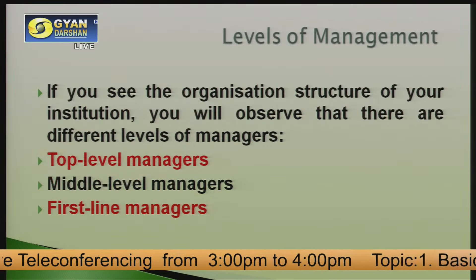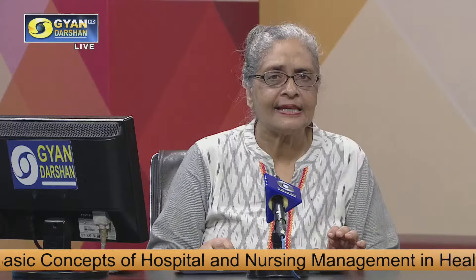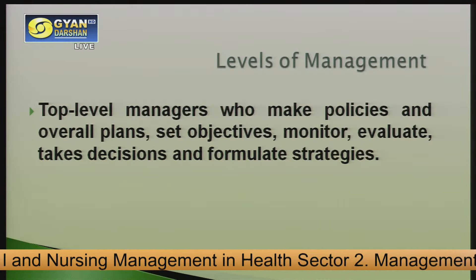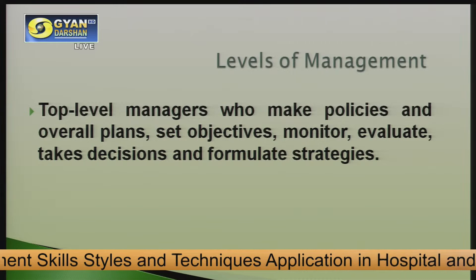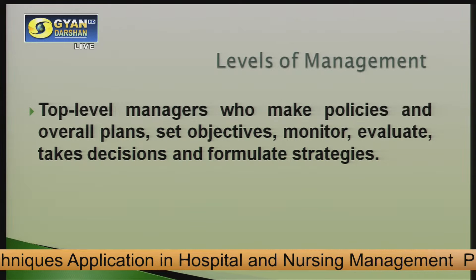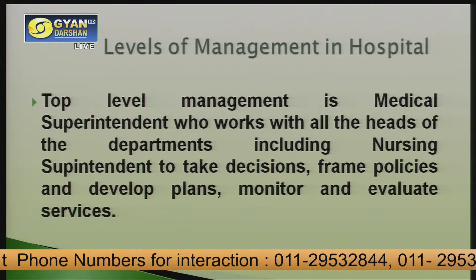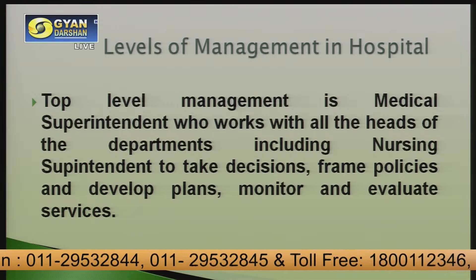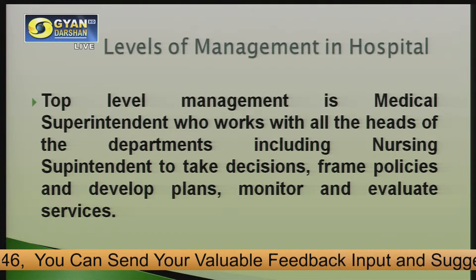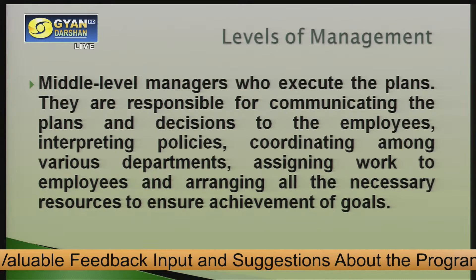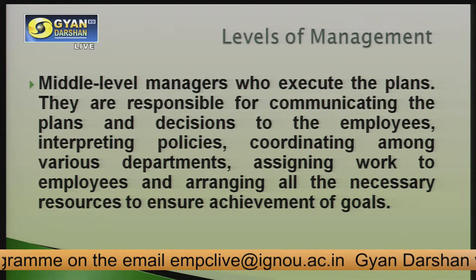Levels of management: All institutions have top-level management, middle-level management, and first-line managers. Top-level managers make policies, overall plans, set objectives, set monitoring and evaluation guidelines, take decisions, and formulate strategies. In a hospital, top-level managers are the medical superintendent working with all heads of departments, including the nursing superintendent or CNO, to take decisions, frame policies, develop plans, monitor and evaluate services, resources, quality, output, and outcomes of healthcare.